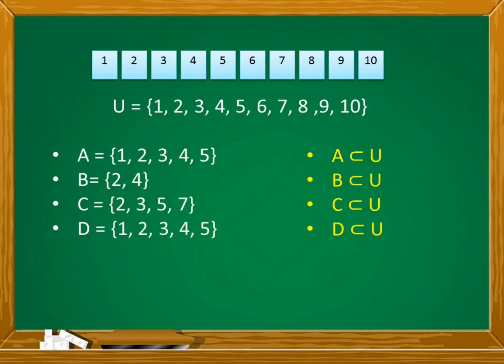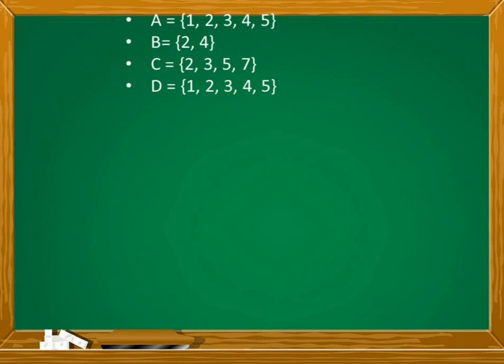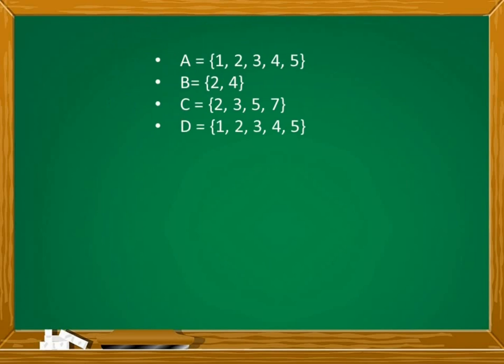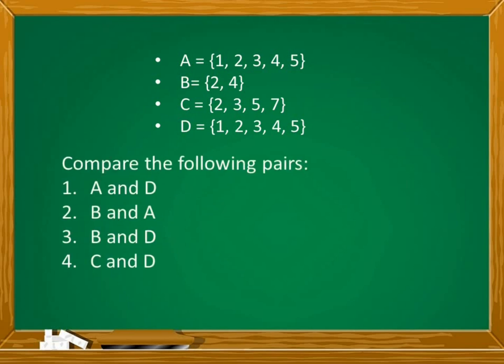All their elements are present in the universal set or the main set, but not all elements of the universal set are in each of them. Again, using these 4 sets — set A with elements 1, 2, 3, 4, and 5; set B with elements 2 and 4; set C contains 2, 3, 5, and 7; and set D with elements 1, 2, 3, 4, and 5 — I want you to pause this video and try to compare the following pairs: number 1, set A and set D; number 2, set B and A; number 3, set B and set D; and number 4, set C and D.